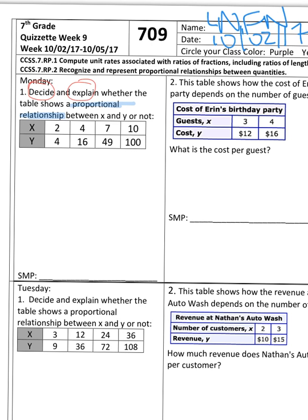So if it doesn't show a proportional relationship, you have to explain why it doesn't. And if it does, you have to also explain why it does make a proportional relationship. Now, you guys haven't learned about proportional relationships. This is the first time you see this.